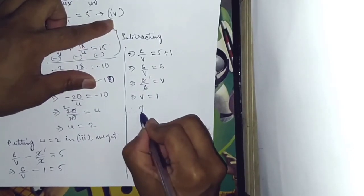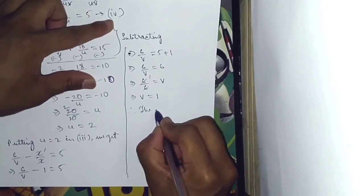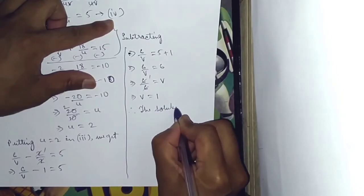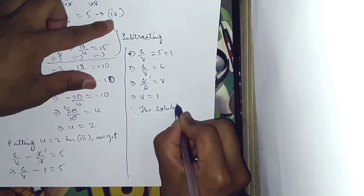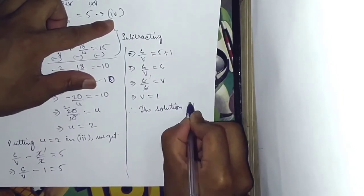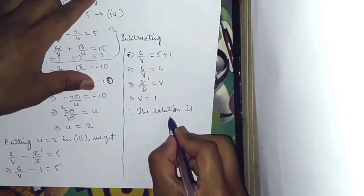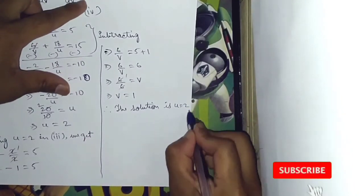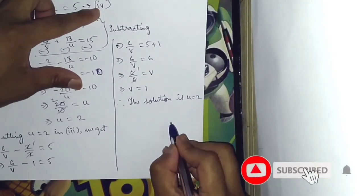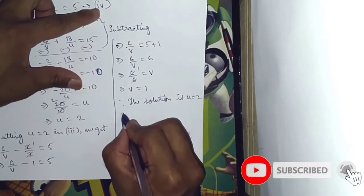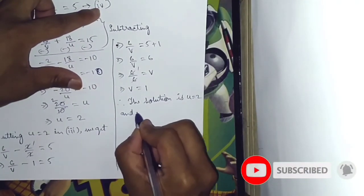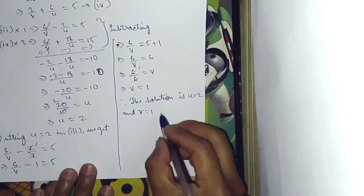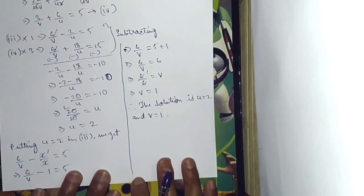Therefore, the solution is U equals 2 and V equals 1.